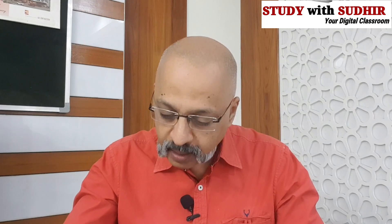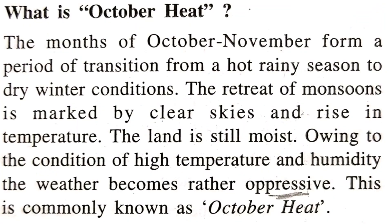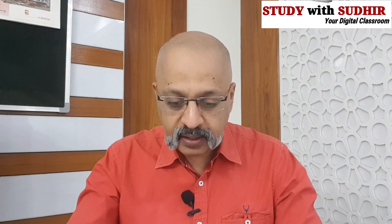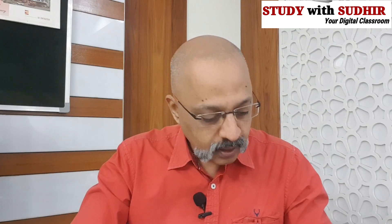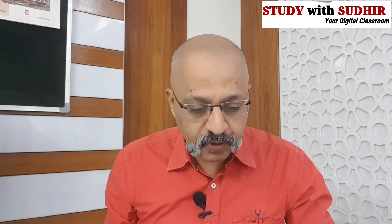October heat: the months of October and November form a period of transition from a hot rainy season to dry winter conditions. The retreat of monsoon is marked by clear skies and rising temperature. The land is still moist, and owing to the condition of high temperature and humidity, the weather becomes oppressive. This is known as October heat.